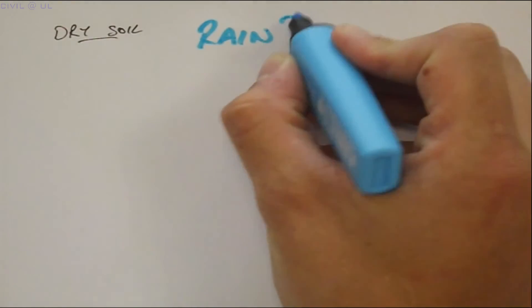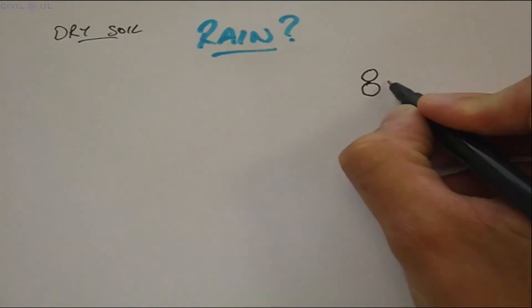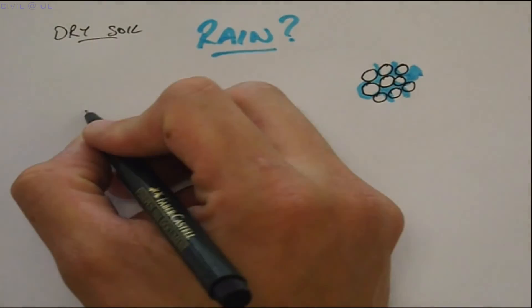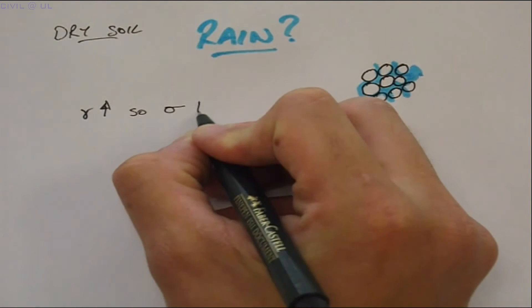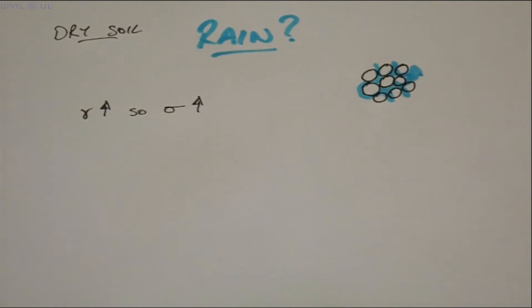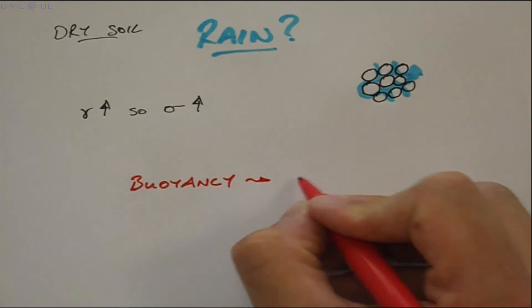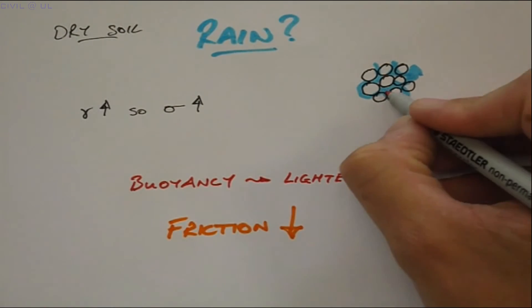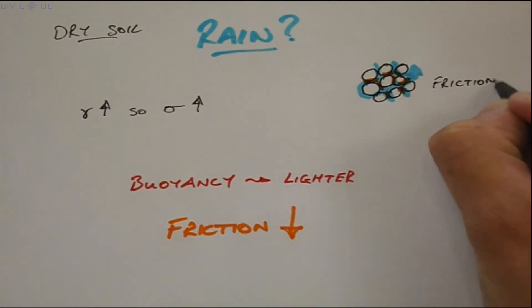What happens when it rains or the water table rises and water enters the void space between the particles? By filling the void space, the unit weight of the soil increases and hence the total stress increases. But, the presence of water in the void space also causes a buoyancy effect, making each particle lighter and thus reducing the inter-particle friction. So, hold that thought.